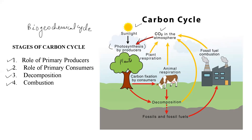The plants, which are the primary producers, are also involved in the carbon cycle in another manner where they release carbon dioxide back into the air. Now, talking about the second stage — the role of primary consumers. The primary consumers, which include animals like cows and horses, use plants as their food material for obtaining nutrition.